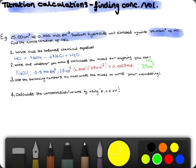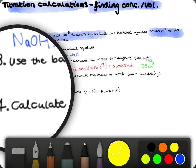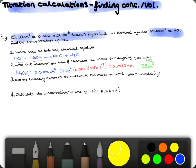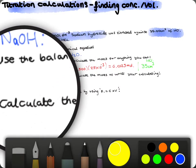So, the next step is we use the balancing numbers to calculate the moles of what we're calculating. So, from this equation, we can see that we have a one-to-one ratio. So, it's one-to-one.